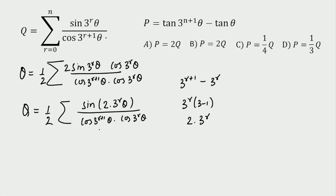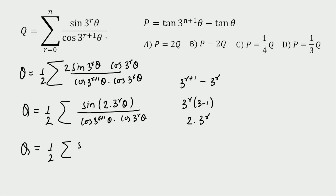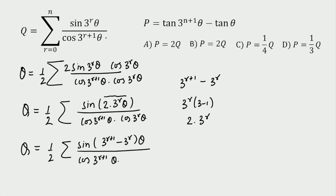Whenever two cosine terms appear in the denominator, we multiply by the sine of the difference of angles. The difference of the two angles is 2·3^r, which is exactly what we have in the numerator. So q = ½ · Σ sin(3^(r+1) · θ − 3^r · θ) / [cos(3^(r+1) · θ) · cos(3^r · θ)], where r goes from 0 to n.